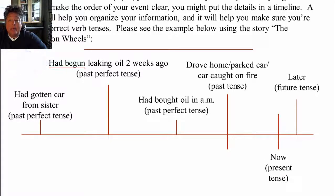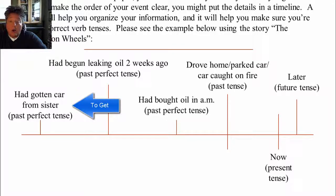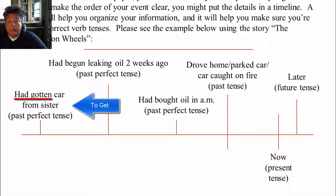Even before the car had begun to leak, I had gotten the car from my sister. So again I'm still using the past perfect tense — 'had gotten,' which is the past perfect of 'to get.'